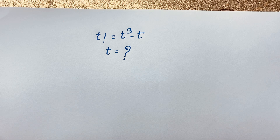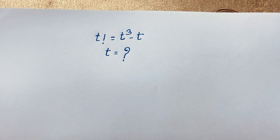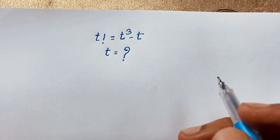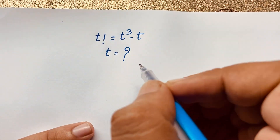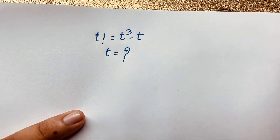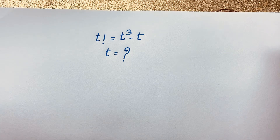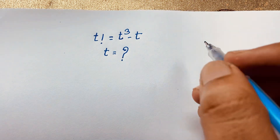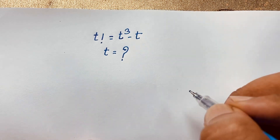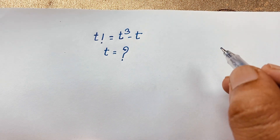Hello everyone. Welcome to Russia's Classroom. Today we have solved a nice math Olympiad question. It is a viral math Olympiad question. This question is: t factorial is equal to t to the power 3 minus t. Here t is equal to what? How to solve this interesting factorial math problem?